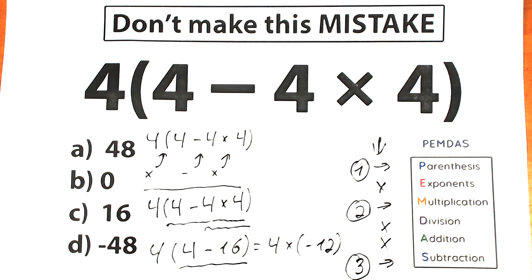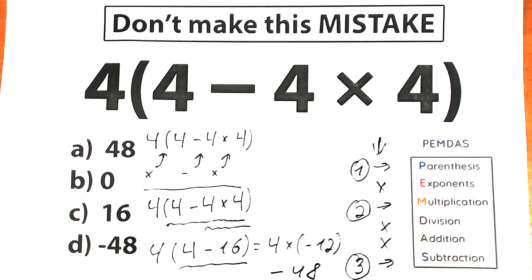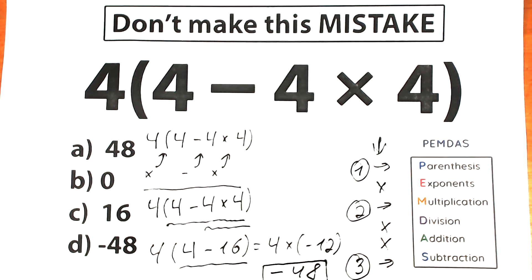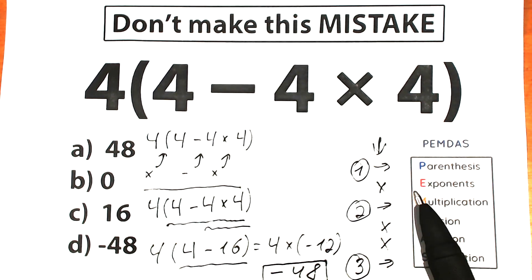Our last step is to multiply 4 times minus 12, which is equal to minus 48. This is our solution and the correct answer to this challenge. I hope you understand my explanation because this is the correct approach.